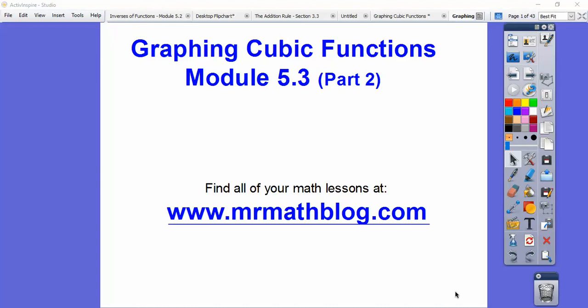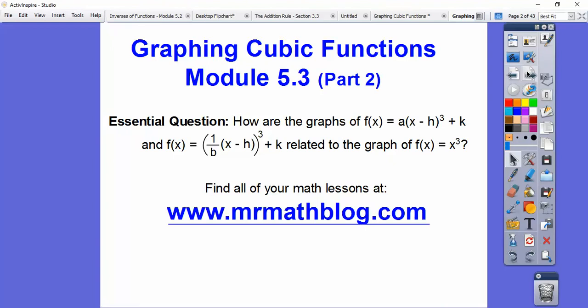Hey guys, this lesson is the second part of module 5.3 of our Integrated Math 3 textbook, graphing cubic functions. Don't forget all your lessons can be found at that groovy website. So the same essential question: how is f(x) equals a times (x minus h) cubed plus k, and f(x) equals 1 over b inside the parentheses times (x minus h) cubed plus k, related to this graph?